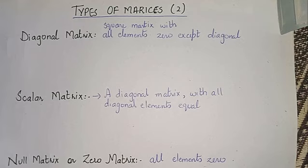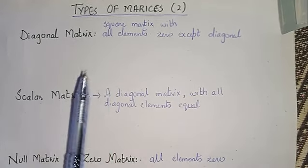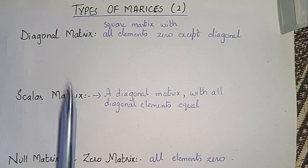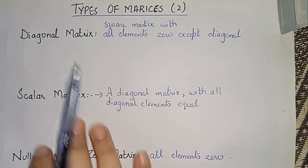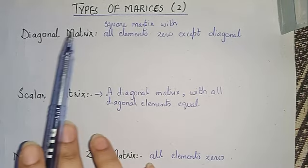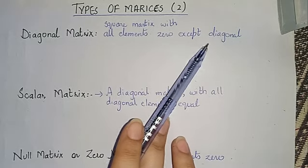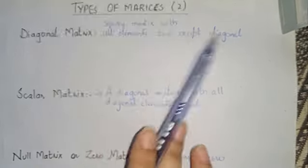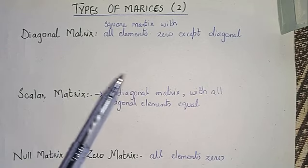Assalamu alaikum, welcome back to my video. In this video we will continue — type of matrices part 2. We have already discussed 4 matrices; the next 4 matrices we will discuss now. The first one for today's video is diagonal matrix. A diagonal matrix is a square matrix where all elements are 0 except the diagonal. I will explain with an example so you should be clear about the diagonal.